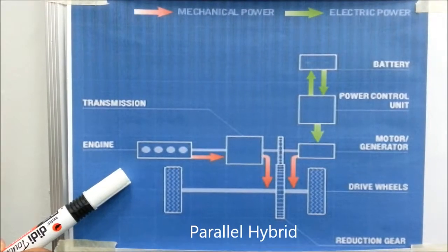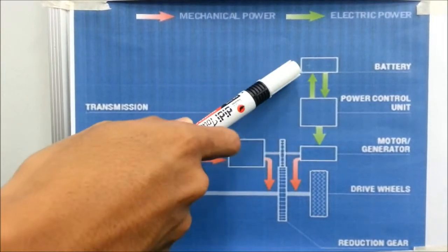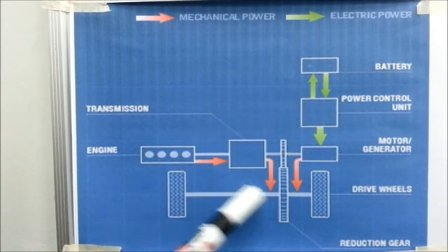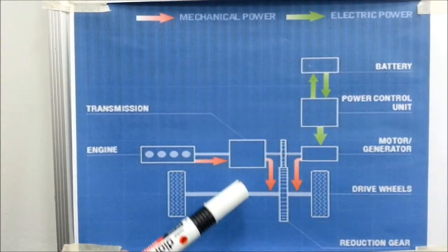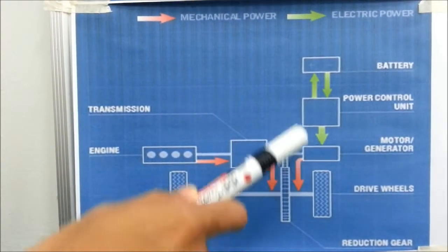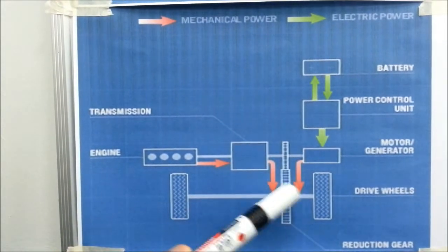In a parallel hybrid, either the engine or the battery and motor or both can directly propel the vehicle. The engine can additionally recharge the battery through the motor or generator, or they can be recharged from the wheel when regenerating.